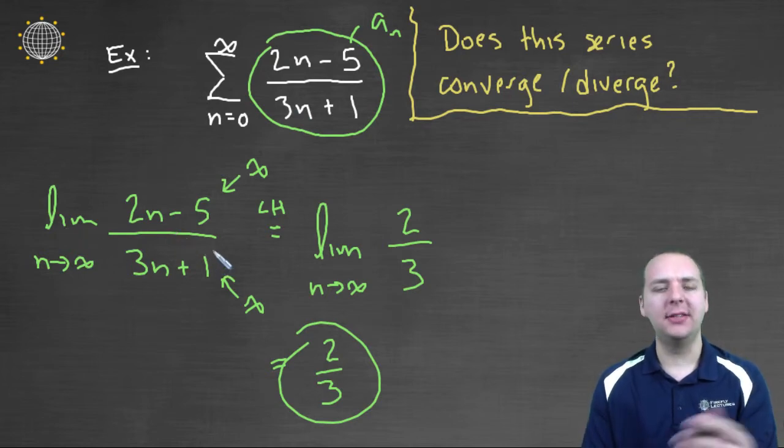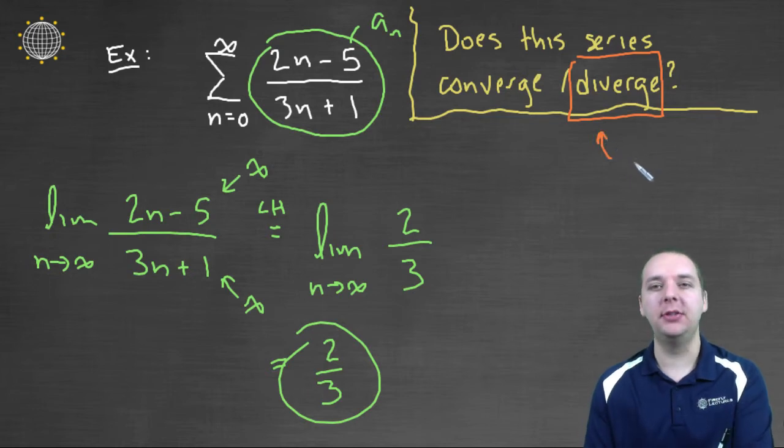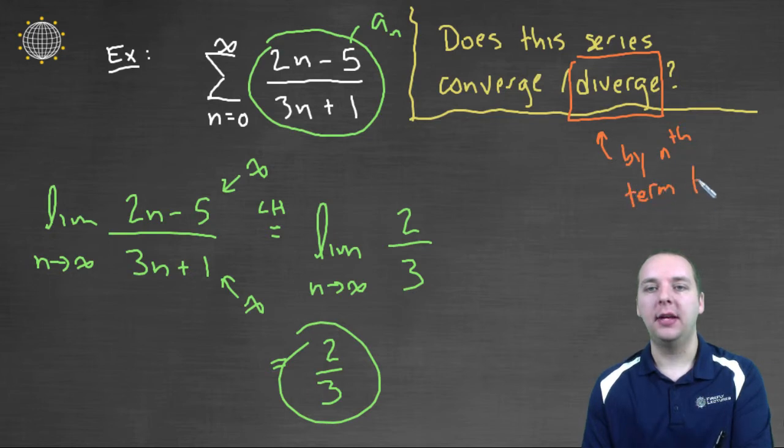And so how can a series have a prayer of converging if the terms don't even get smaller? And so it's pretty clear, very clear in fact, that this series is going to diverge. And you have to say what test you used. It diverges by the nth term test.